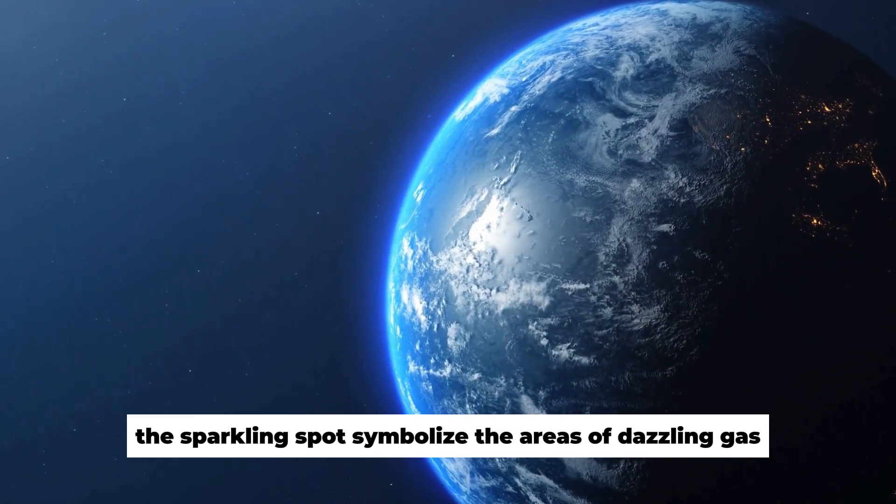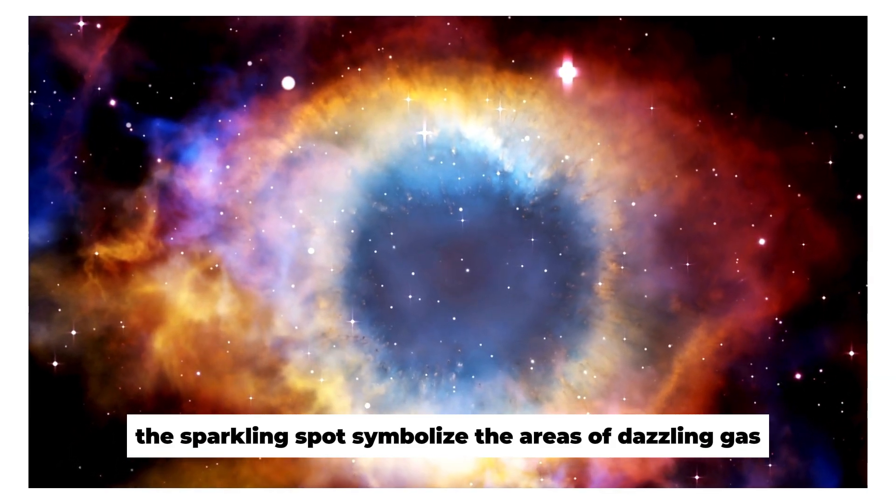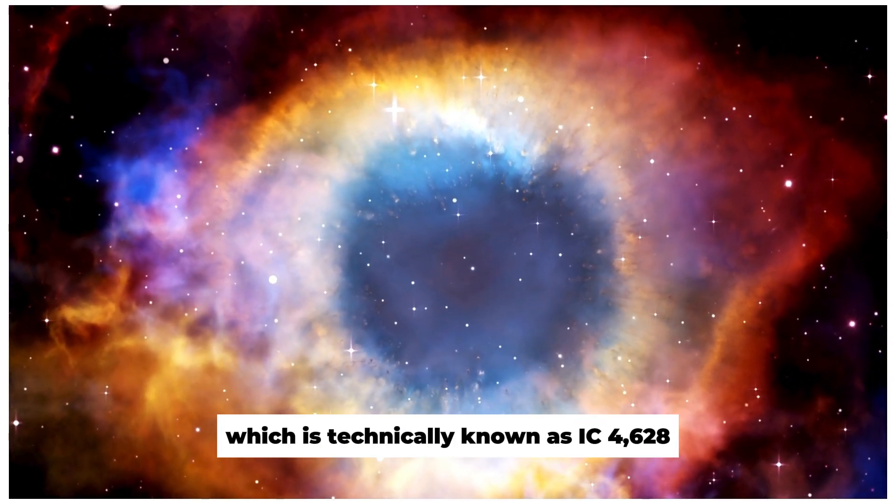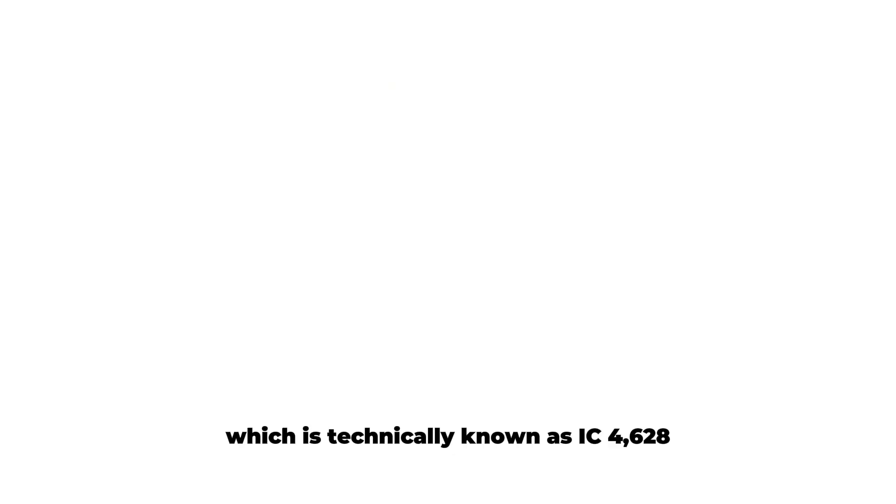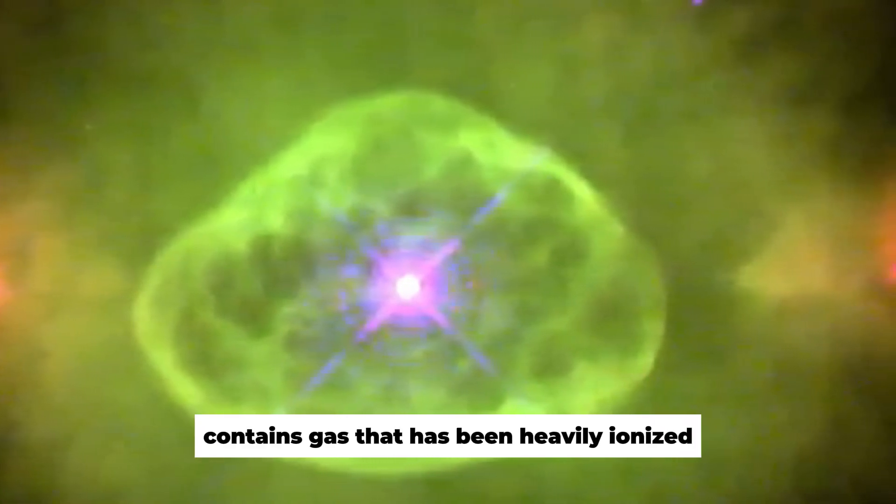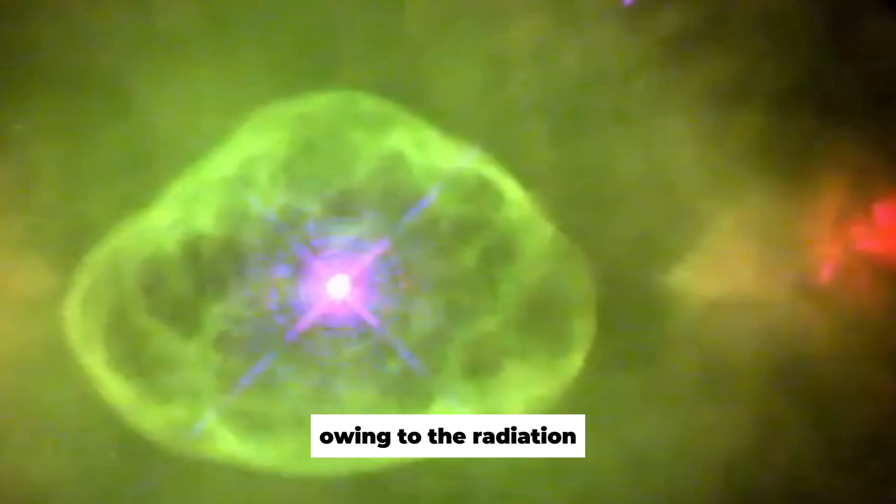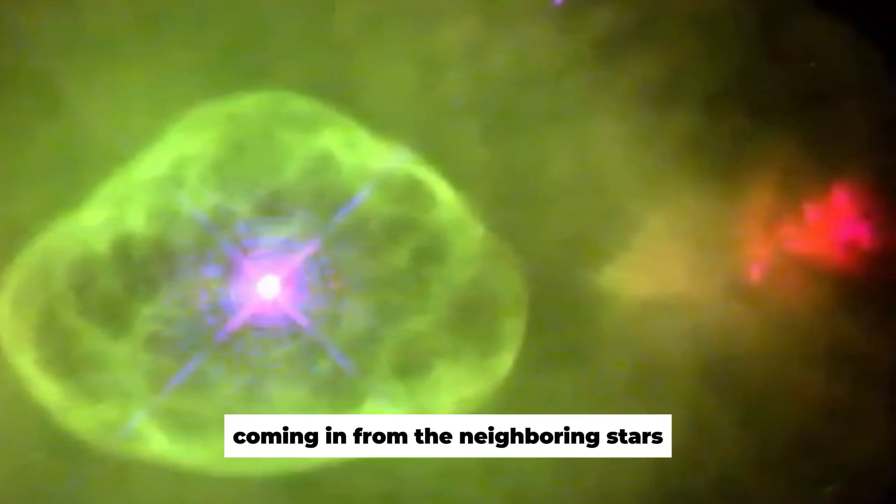The sparkling spots symbolize the areas of dazzling gas. This emission nebula, which is technically known as IC 4628, contains gas that has been heavily ionized owing to the radiation coming in from the neighboring stars.